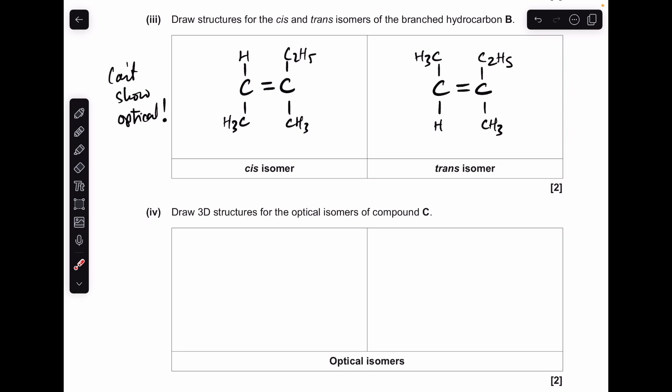Another possible structure is this one here. So I've gone for methyl groups now being the identical group. So again, you can see same side cis, diagonally opposite sides of the double bond trans. And there's no optical isomers possible here because we don't have a chiral carbon.